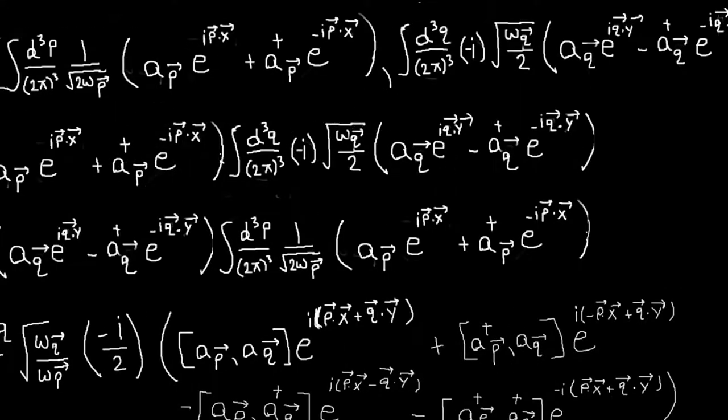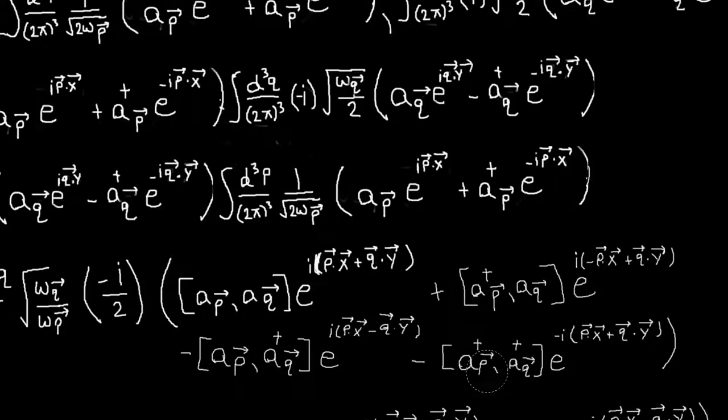So the next term, we have an a_p here, a_p dagger, an a_q, and that has an e^{-ipx} and e^{iqy}. And so similarly down here we have an a_q and an a_p dagger, and e^{iqy}, e^{-ipx}. So we'll get a commutator a_p dagger, a_q, and then just that common factor here. And then we'll have just two more terms that work out just like that.